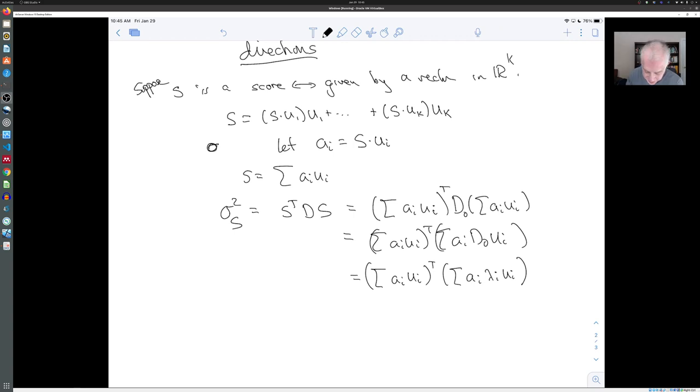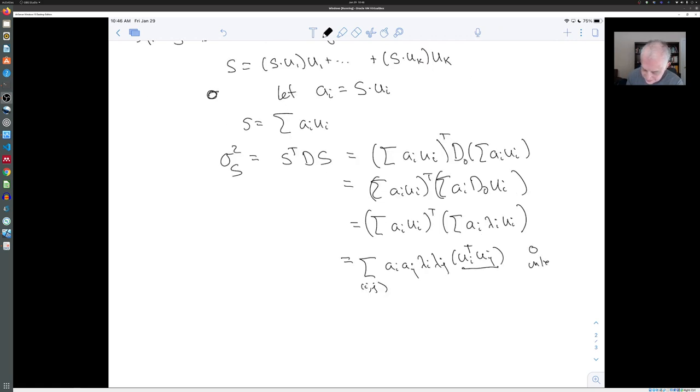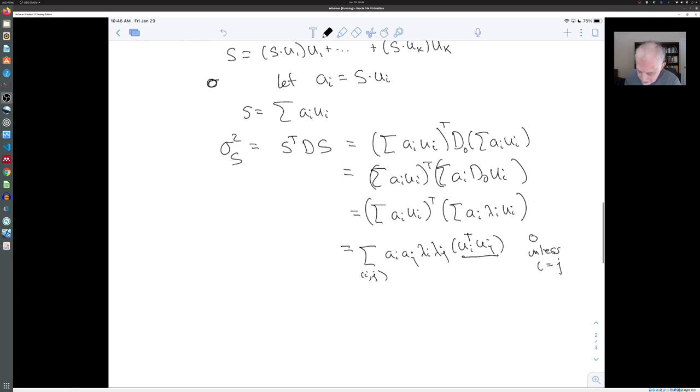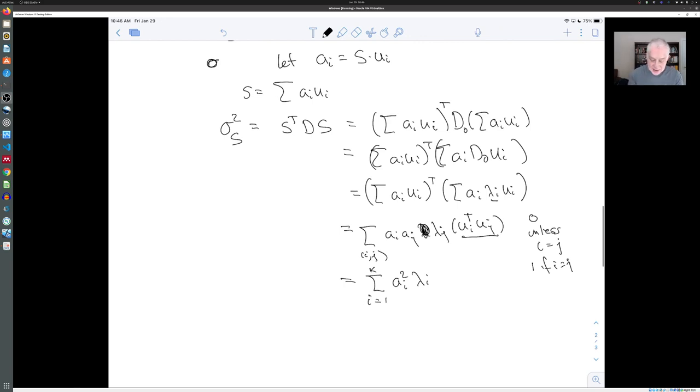This is the sum of ai ui transpose times the sum of ai D ui. These are eigenvectors with eigenvalues lambda, so this is the sum of ai ui transpose times the sum of ai lambda i ui. If you expand this out, this is the sum of ai aj lambda i lambda j ui transpose uj sum over all pairs i j. These terms are all zero unless i equals j because they're orthonormal and one if i does equal j. The only terms that survive here are the sum—oh sorry, there's only one lambda—the sum ai squared lambda i.